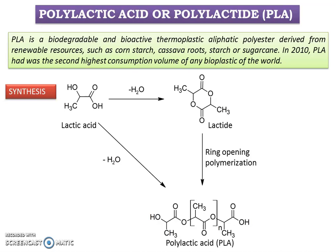After understanding about biodegradable plastics, we will now discuss the synthesis, properties and applications of one bioplastic — polylactic acid (PLA). What is polylactic acid? It is a biodegradable polymer. It is a bioactive thermoplastic aliphatic polyester derived from renewable sources such as corn starch, cassava roots, starch or sugar cane. Polylactic acid was the second highest consumption volume of any bioplastic in the world in 2010, making it a very important biodegradable plastic.